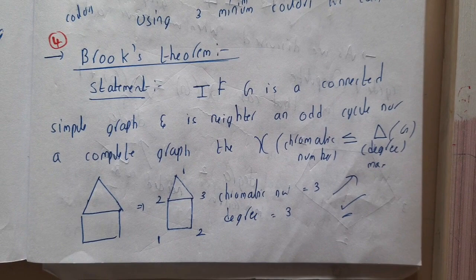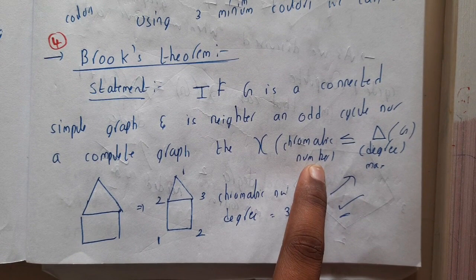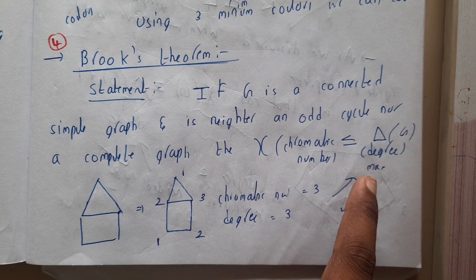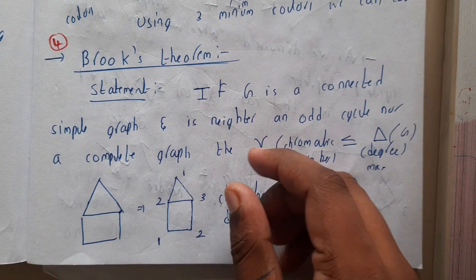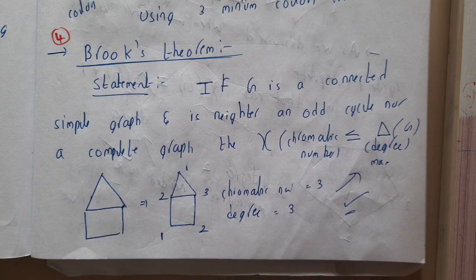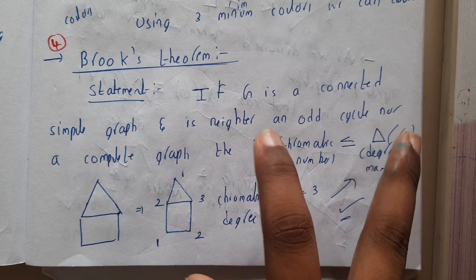Hello guys, we are back with our next lecture. In this lecture, let us go through Brooks' theorem. This theorem is discussed in graph coloring. The whole idea states that the chromatic number of a particular graph is always less than or equal to the degree of the whole graph. The degree of the whole graph is the maximum degree among all the vertices.